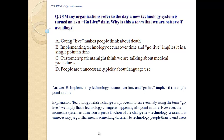Answer B: Implementing technology occurs over time and 'go live' implies it is a single point in time. Explanation: Technology-related change is a process, not an event. By using the term 'go live,' we imply that change is happening at a single point in time. However, the moment a system is turned on is just a fraction of the change new technology creates. The term also means something different to technology people than to end users.